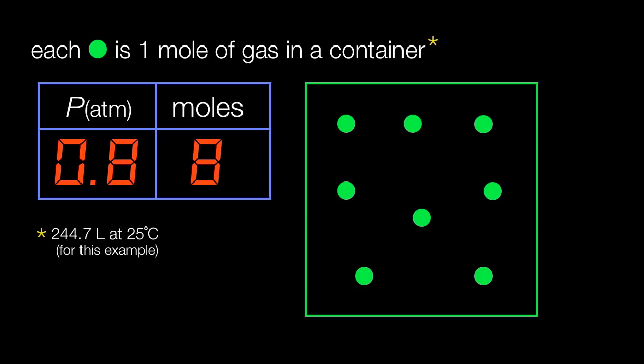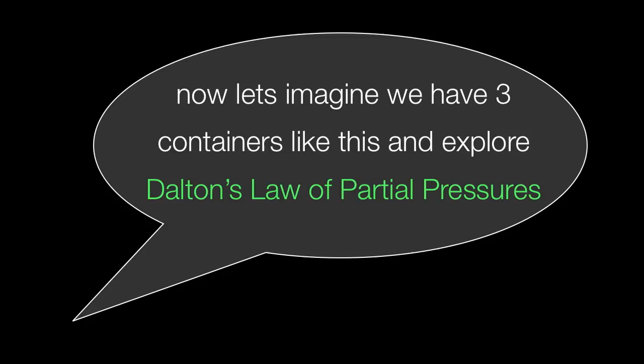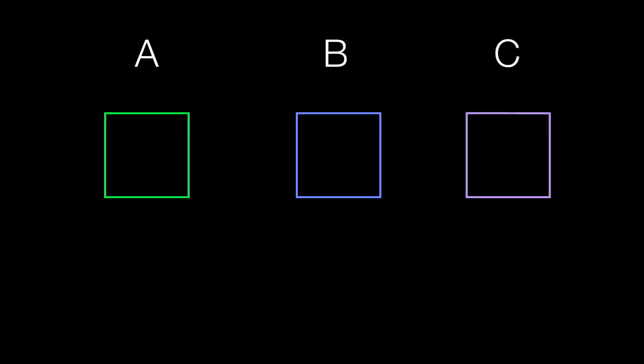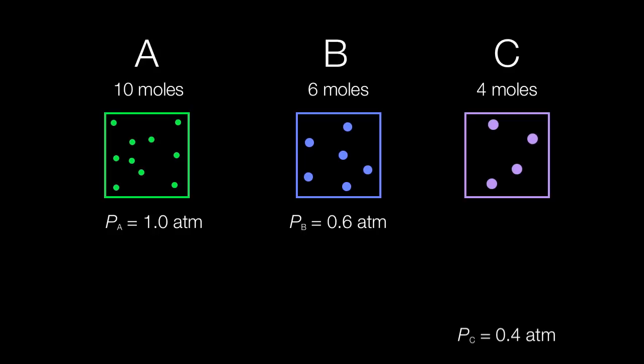But we really want to shift our focus now into several containers combining to make a mixture. So let's imagine we have three containers like this and explore Dalton's Law of Partial Pressures. So here's three containers. We're going to label them A, B, and C for the gases that we're going to put in them. We're going to put 10 moles of gas A, 6 moles of gas B, and 4 moles of gas C. That's going to give us 1 atmosphere for A, 0.6 atmospheres for B, and 0.4 atmospheres for C.